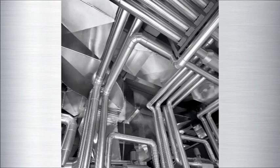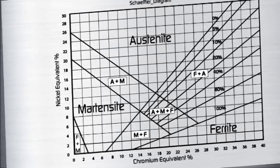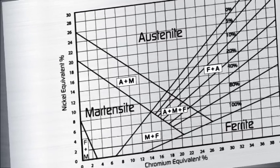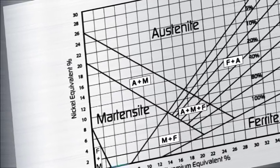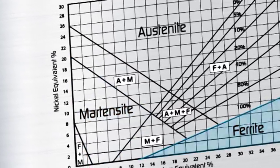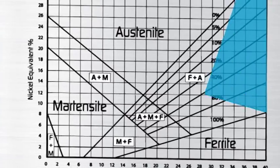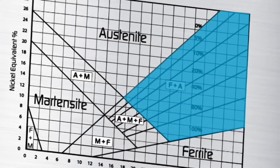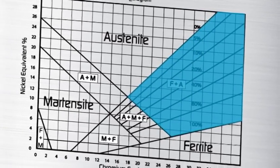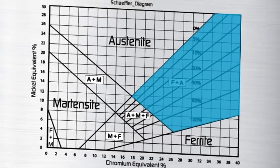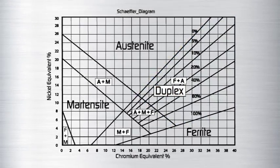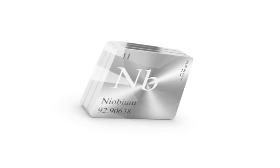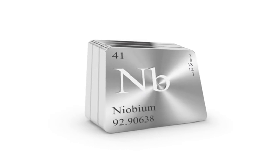A Schaeffler diagram, which is often used to select welding consumables for the fabrication of stainless steels, also serves to illustrate the importance of the balance between chromium and nickel. The Schaeffler diagram reveals that, depending on the precise levels of chromium and nickel, it is possible to produce steels which are martensitic, ferritic, austenitic, or indeed mixtures of ferrite and austenite. Steels in the final category are, for obvious reasons, known as duplex stainless steels.